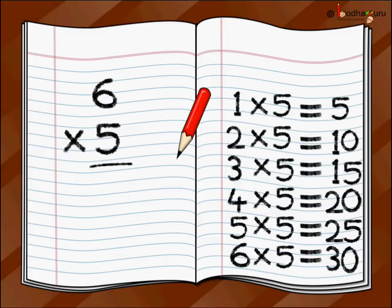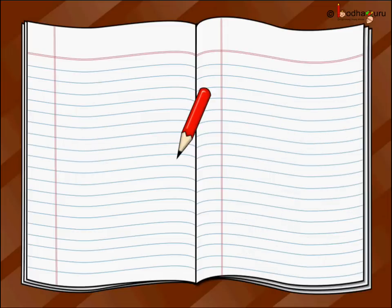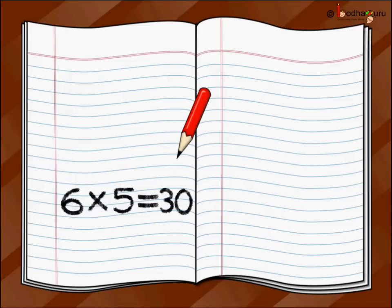Or when you add 5 six times: 5 plus 5 plus 5 plus 5 plus 5 plus 5 that is equal to 30. We would say 6 multiplied by 5 is equal to 30, or 6 times 5 is equal to 30, or 6 baskets with 5 hands each is equal to 30.